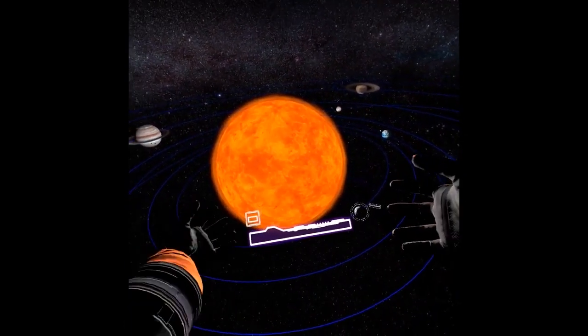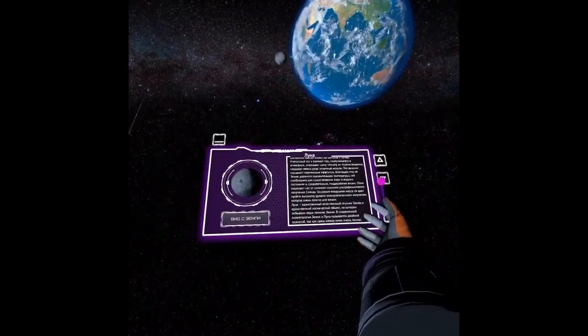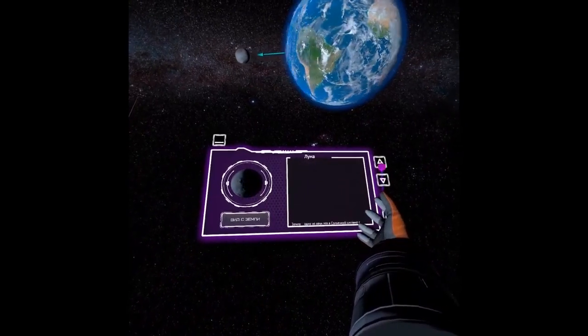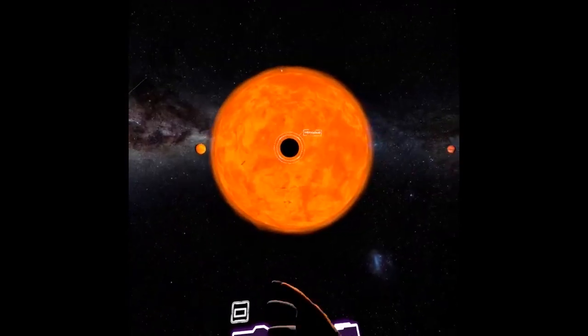Of course, special attention was paid to Earth. In addition to the natural satellite, the moon, the ISS and other artificial satellites and objects launched at different times can be found in the Earth's orbit.